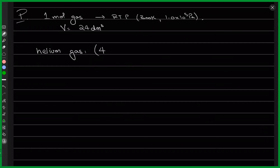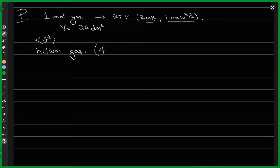The next thing we started was a problem, so I'll restate it. At room temperature, which is 300 Kelvins, and at room pressure of 1.0 × 10⁵ Pascals, you have one mole of gas. This mole of gas at room temperature and pressure occupies a volume of 24 decimeters cubed. The task is to compute the root mean square velocity.